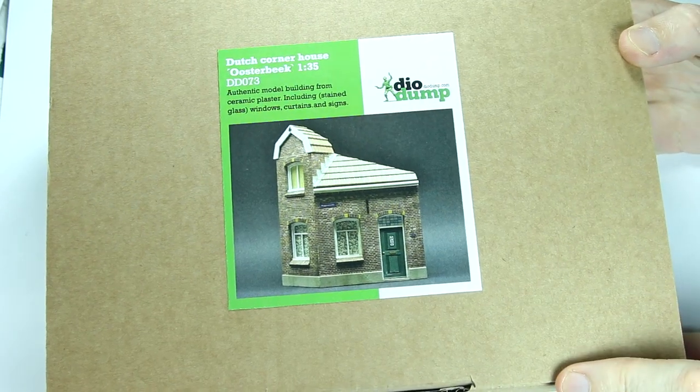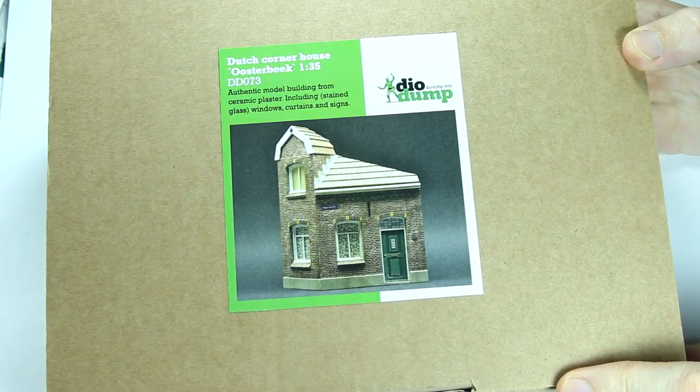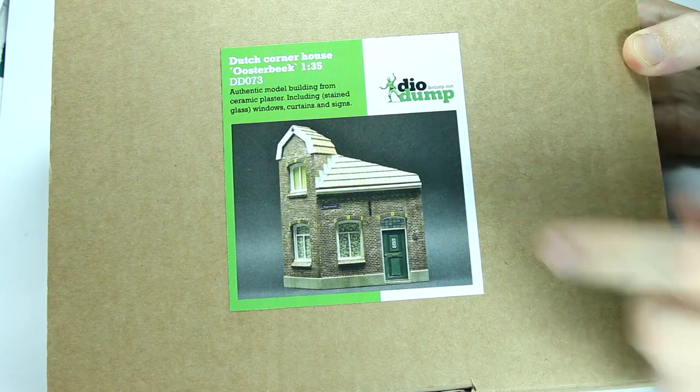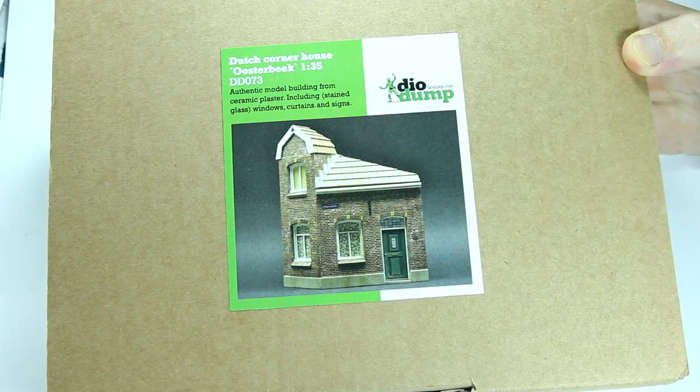Hi, welcome back to the channel. Today I'm going to look at a new product I bought recently, which is this Dutch Corner House from Diodump in 1:35th scale.